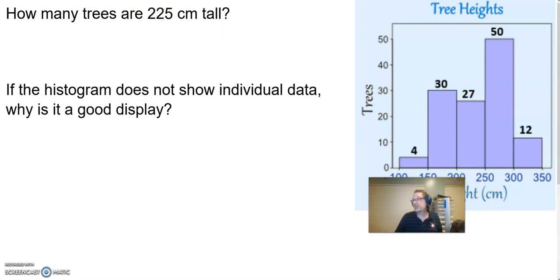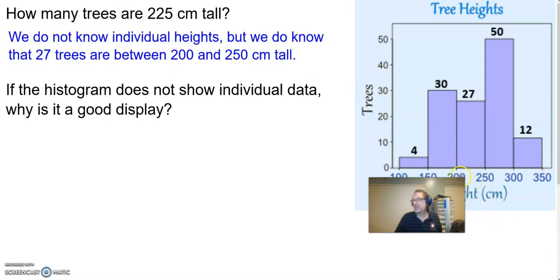But I do know 27 trees are between 200 and 250 centimeters tall. But how many of them are 225? I don't know. It could be all 27 or it could be none of them, because this is an interval not an actual point.